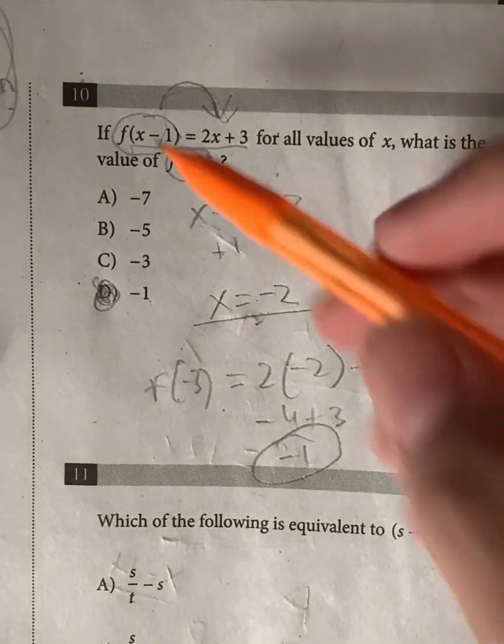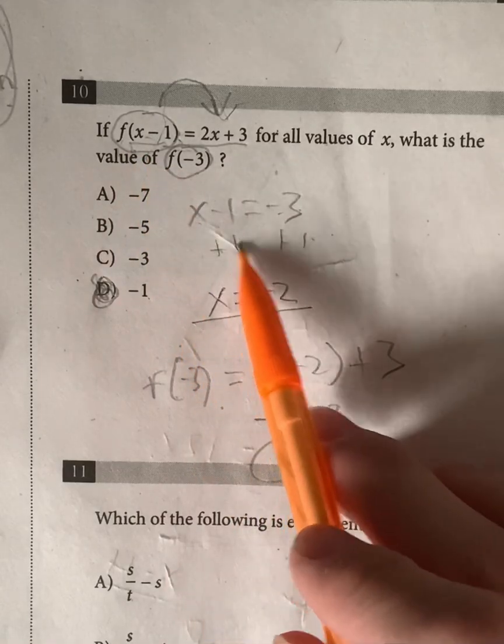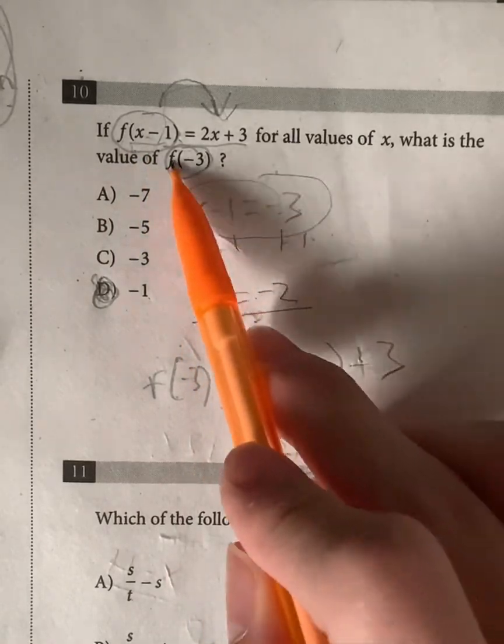Exactly how you do it, because this is not exactly f of x, but rather f of x minus 1. So that's why we set the equation as x minus 1 is equal to negative 3. Okay, moving on.